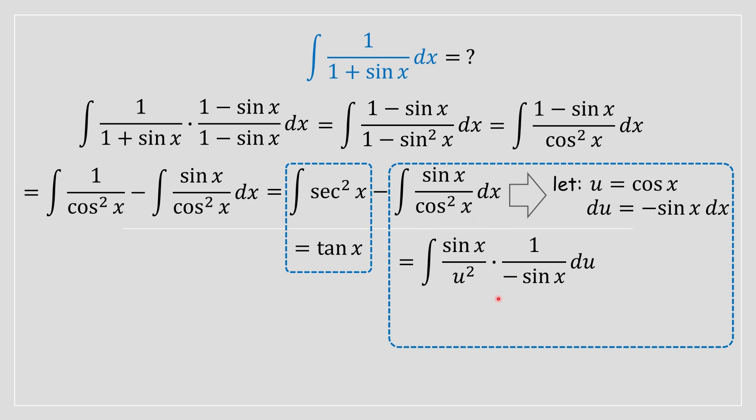Once it's been substituted inside the integral, we are going to cancel the sine of x terms because they appear in the numerator and in the denominator respectively. We are going to move the negative outside the integral, and then all we do now is do one divided by u squared and take the integral of that, and that's very straightforward to solve. That's going to be equal to negative one divided by u.